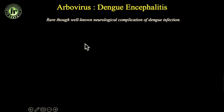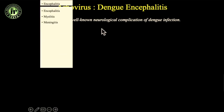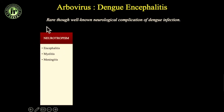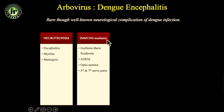Dengue was very common in the last decade; luckily the numbers are getting lesser. CNS involvement is very low — less than 1% of dengue infections affect the CNS — but it is a well-known neurological complication. There are four ways dengue can affect the brain. The commonest is neurotropism, seen in less than 1% of cases, presenting like encephalitis, myelitis, or meningitis.